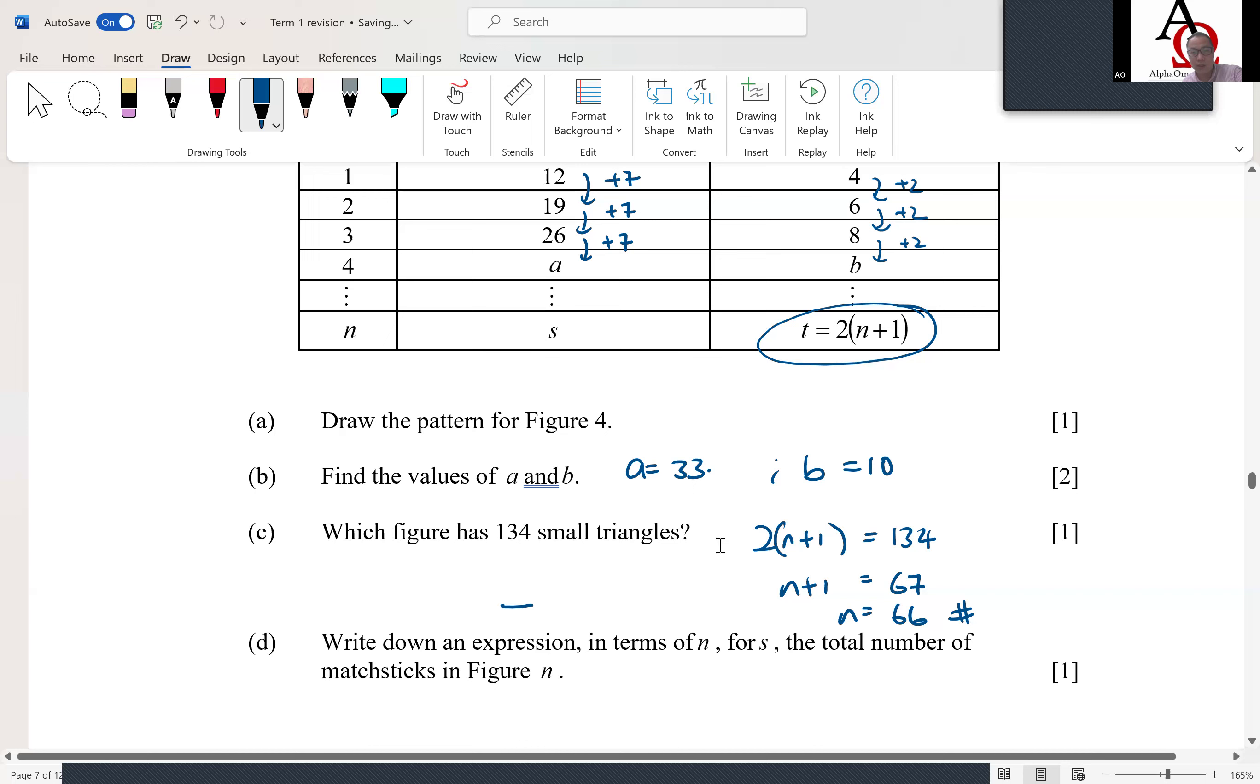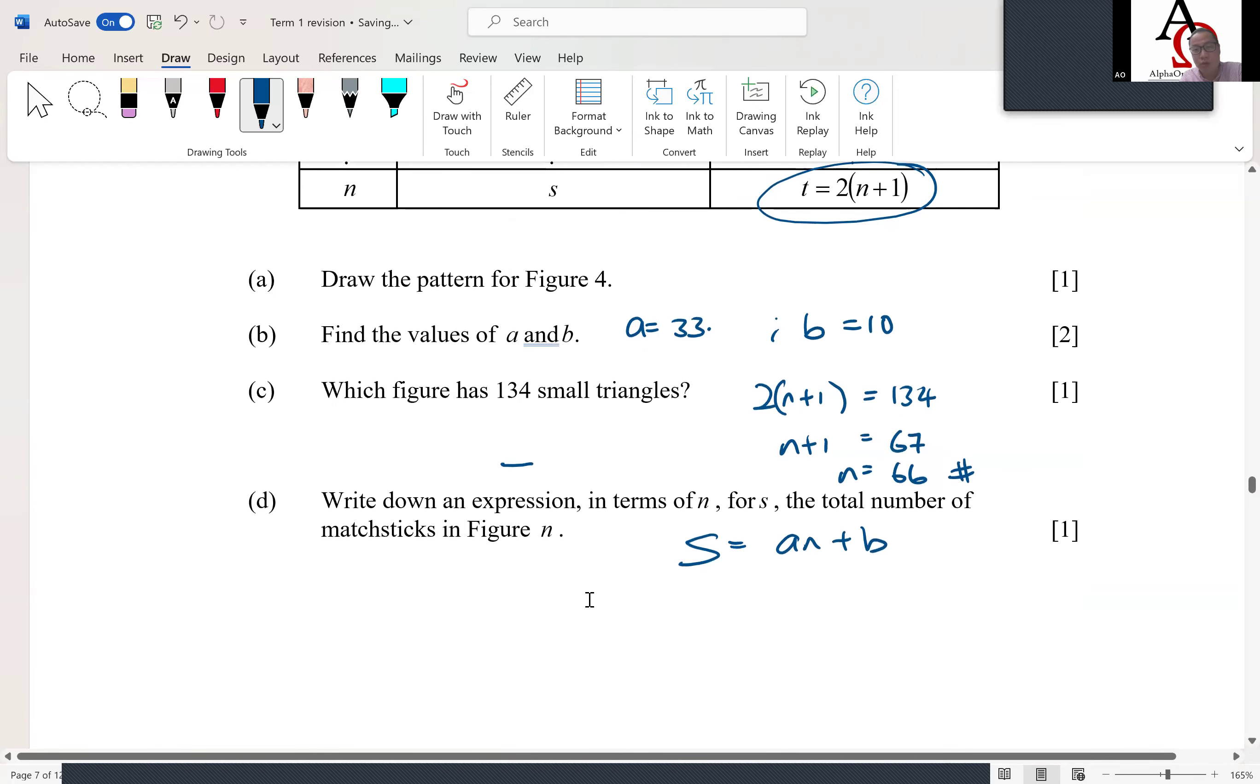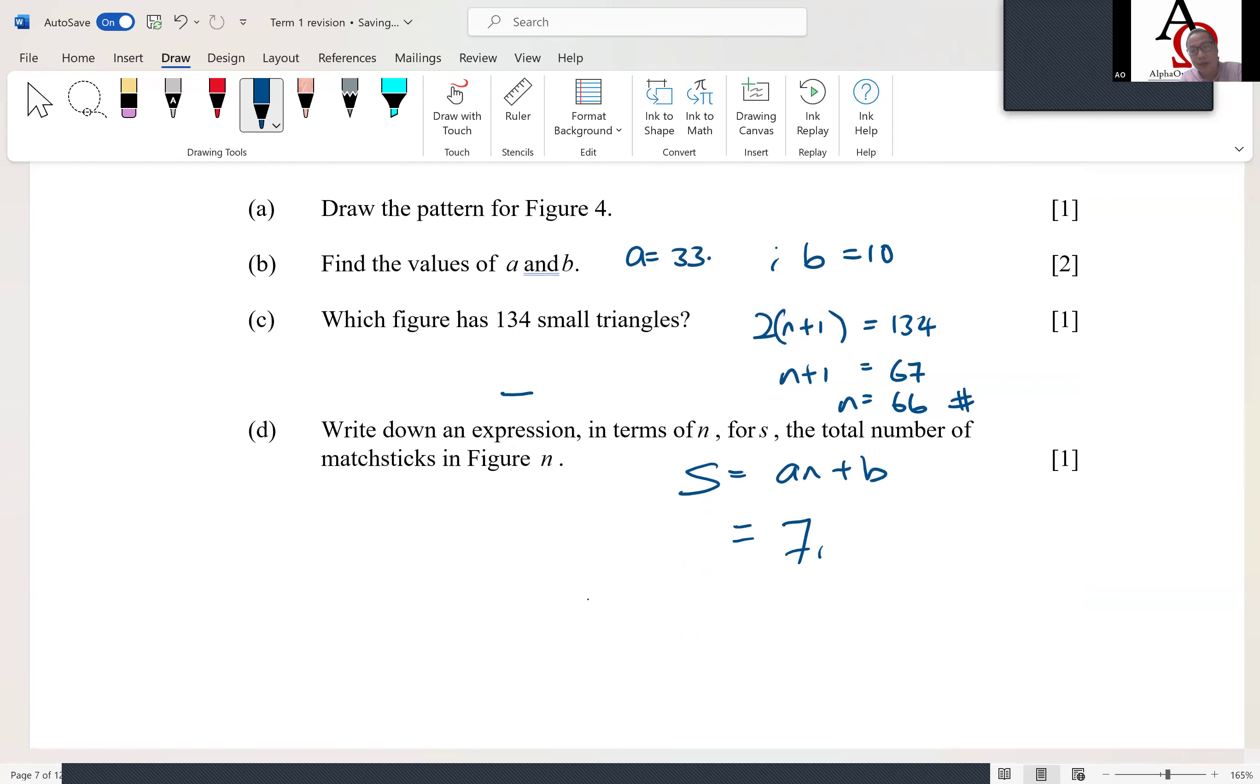Okay, so write down the expression in terms of n for the total number. This is a common difference question, which means we can use an + b, right? an + b. So what is the a? a is what we call the common difference, which is straightaway seven. Okay, then for b, you just take one step back.